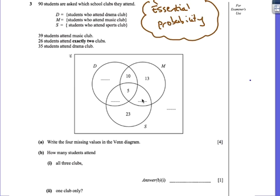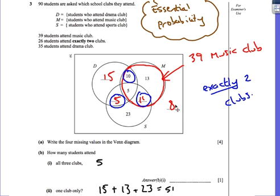Because we already know this one, we can then work out this one, and then we can work back from that. So we've got 39 attend music, so therefore this must be 11. And then if I know that 26 attend exactly two, then I know that 10 plus 11 plus this number here must be equal to 26, therefore this must be 5.